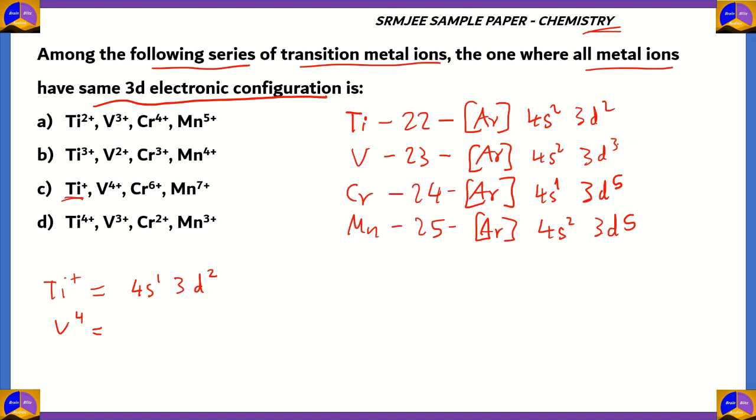So from 3d³, 2 electrons go, so 2 plus 2 that rises to 4. So finally you get 4s⁰, 3d¹. But then as you can see, the 3d electronic configuration is different in Ti⁺ and vanadium 4+. So therefore, option C has to be incorrect. So therefore, it's a good idea to erase that up.